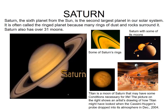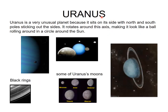Uranus is a very unusual planet because it sits on its side — its north and south poles are tilted. It rotates around its axis in a way that makes it look like a ball rolling around the Sun in a circle. Uranus also has dark rings and several moons.